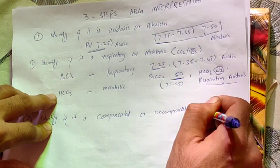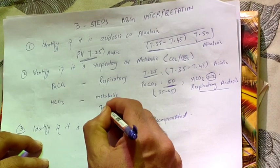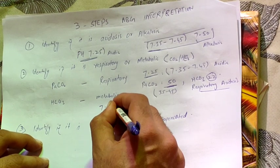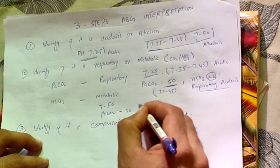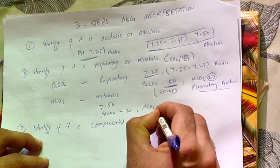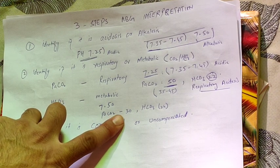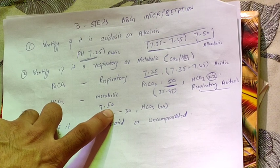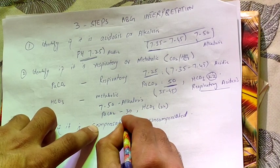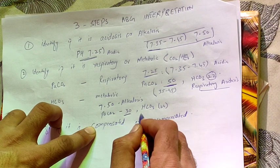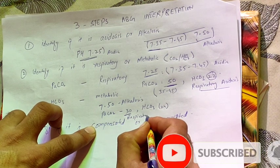Another example: pH is 7.50 and pCO2 is 30, with bicarb again normal at 24. First it is alkalosis. Since pCO2 is 30 — below the normal range of 35 to 45 — and HCO3 is in normal limits (22 to 26), we can easily consider this respiratory alkalosis.